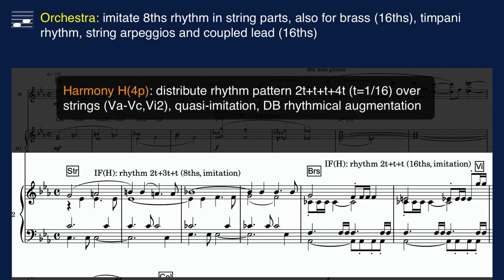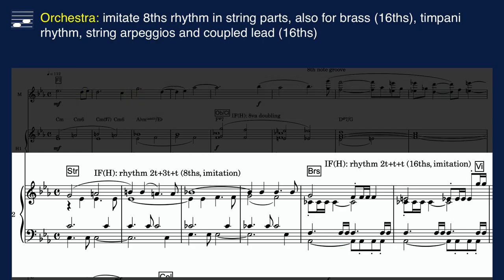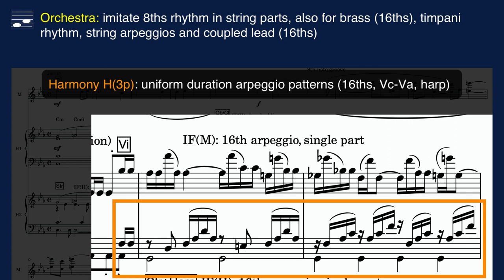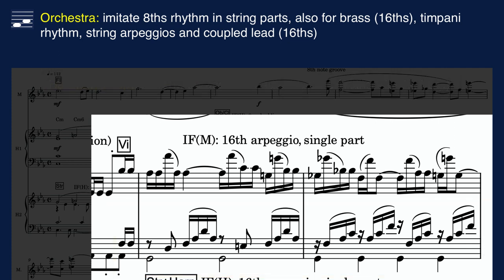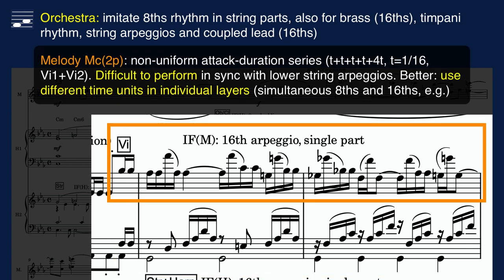In measure 5 the same technique is applied to the strings, but now the time unit is halved to sixteenth notes, and the attack duration pattern is two plus one plus one plus four. Double basses play a rhythmical augmentation. In measure 7 lower strings play uniform duration sixteenth-note single part arpeggios, doubled in harp. Also, the coupled lead part is turned into a sixteenth-note time unit instrumental form, but with non-uniform rhythm for violins.